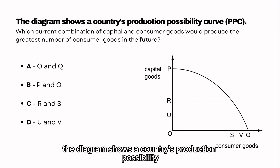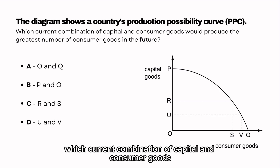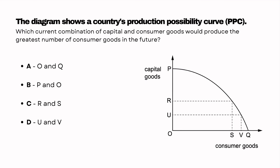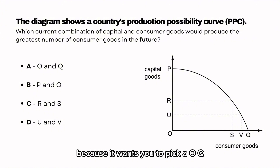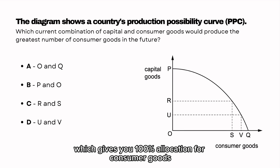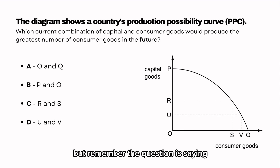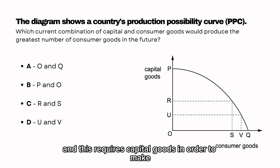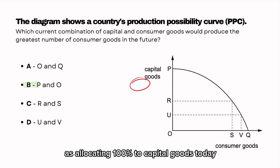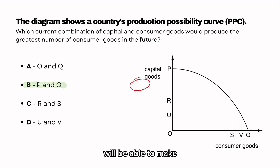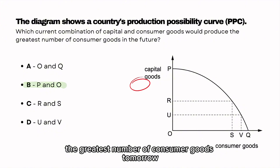The diagram shows a country's production possibility curve. Which current combination of capital and consumer goods would produce the greatest number of consumer goods in the future? This is a bit of a trick question because it wants you to pick A-O-Q which gives you 100% allocation for consumer goods. But remember, the question is saying number of consumer goods in the future, and this requires capital goods. Allocating 100% to capital goods today will be able to make the greatest number of consumer goods tomorrow.